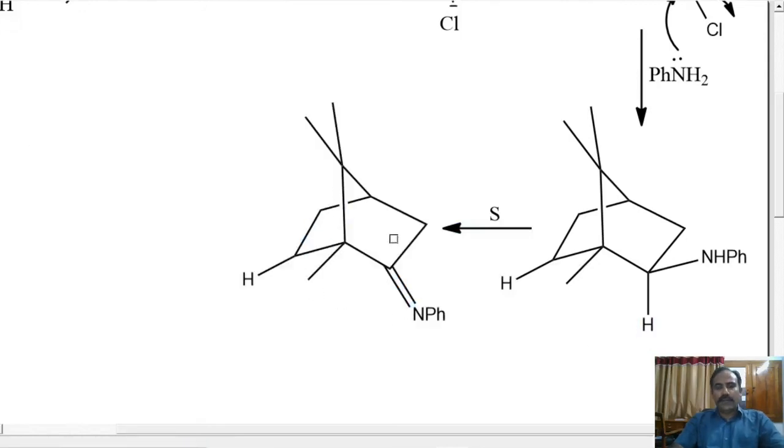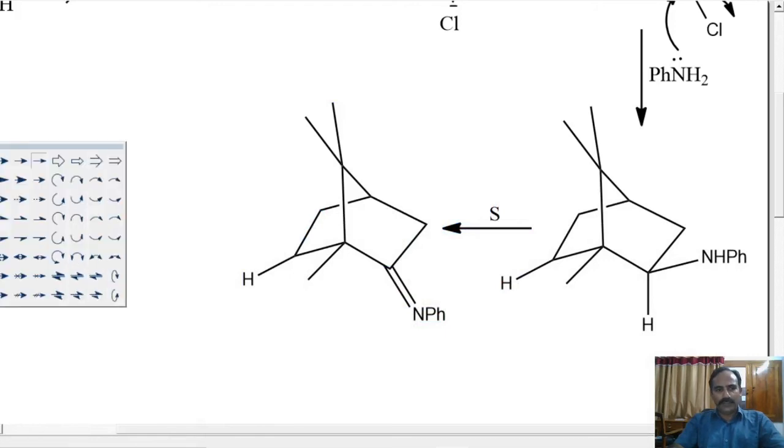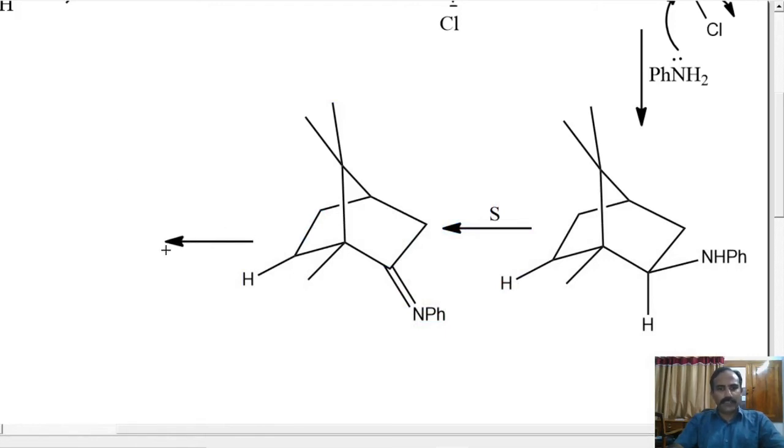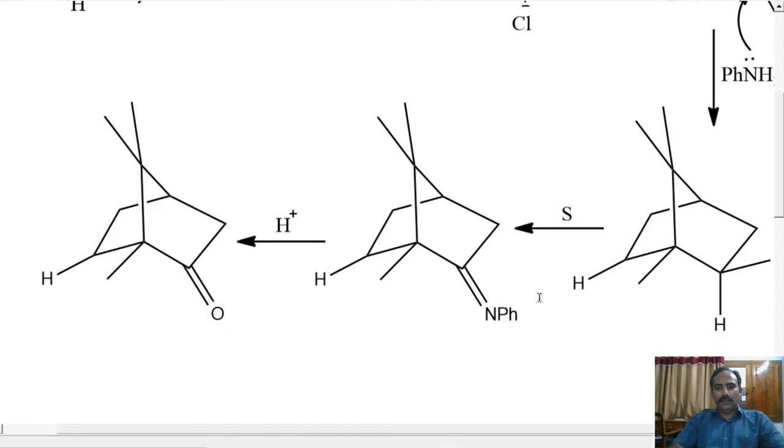This is known as camphor anil and this upon hydrolysis with aqueous acid produces camphor. So, the C=N double bond hydrolyzes and we get a ketone here or we get our product camphor.